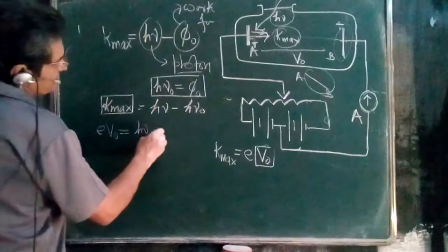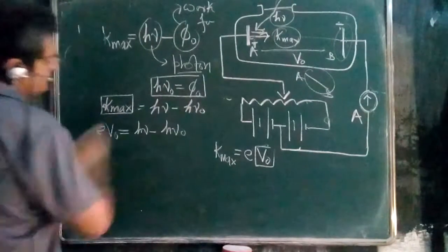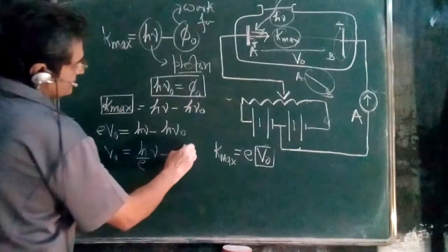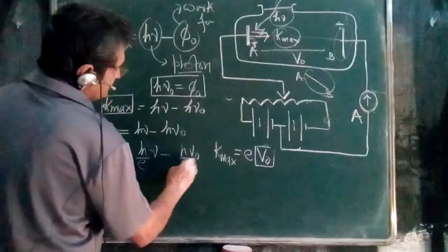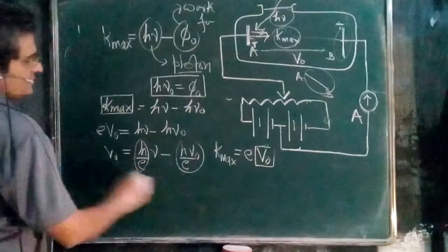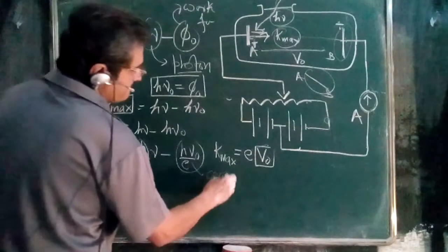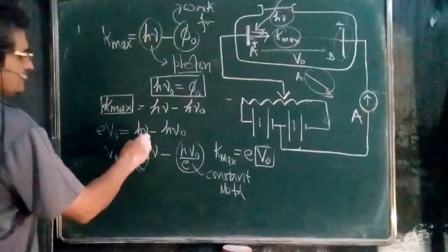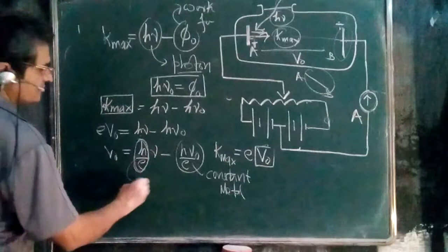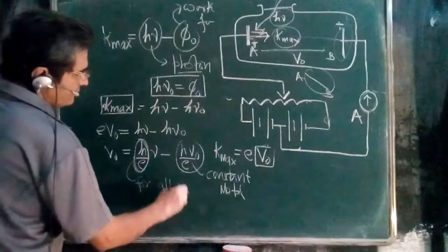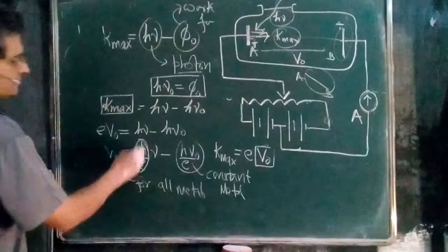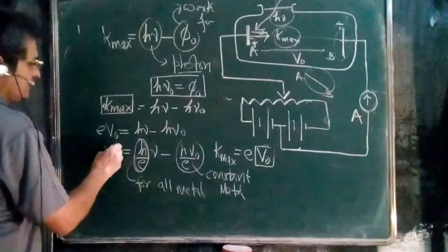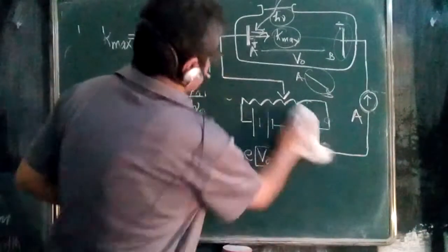So eV₀ = H·μ - H·μ₀, which gives V₀ = (H/e)·μ - (H·μ₀)/e. Here H·μ₀/e is constant for a given metal, and H/e is constant for all metals - this is the slope. Comparing with y = mx + c, or y = mx - c, the slope is H/e and the intercept depends on the metal. This equation is the basis for the important graph we draw next.